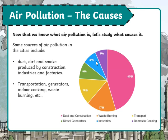As you can see here from the pie chart, 45 percent of air pollution is due to dust and construction, 17 percent is via waste burning, 14 percent is due to transportation, 7 percent due to domestic cooking, 8 percent due to industries, and 9 percent due to diesel generators.